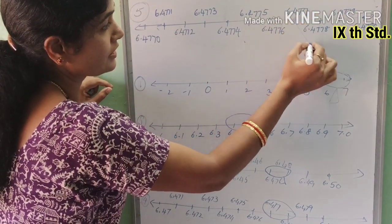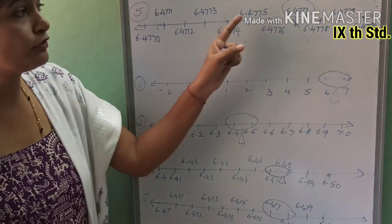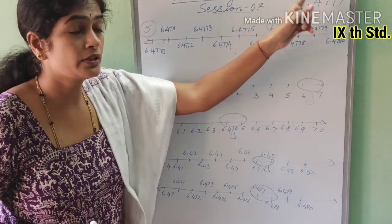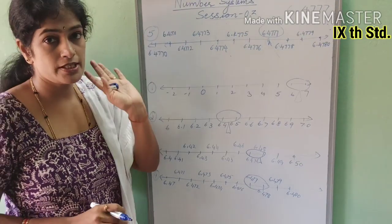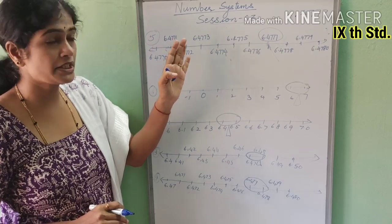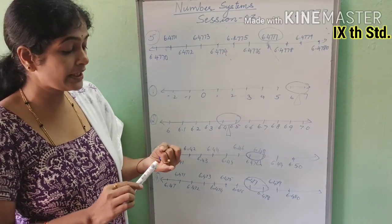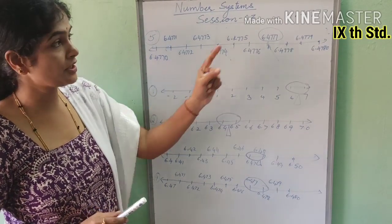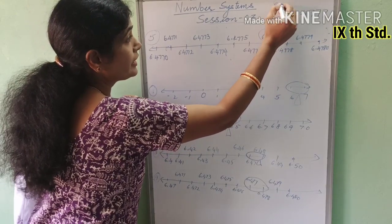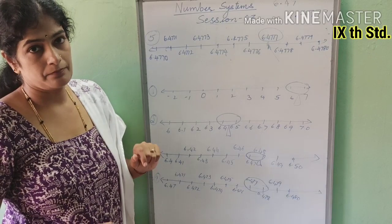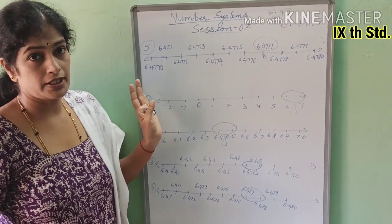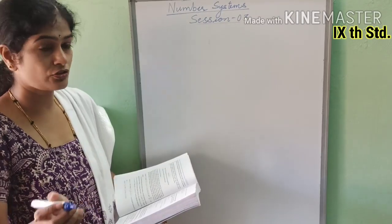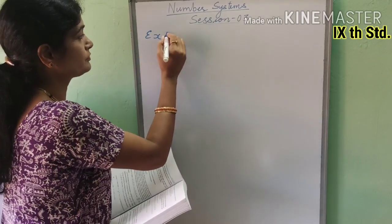This point represents 6.4777 on the number line. We did four magnifications because we were asked to represent up to 4 decimal places. This is the way of representing real numbers on the number line using successive magnification. Now we will try to solve the exercise questions in exercise 1.4.